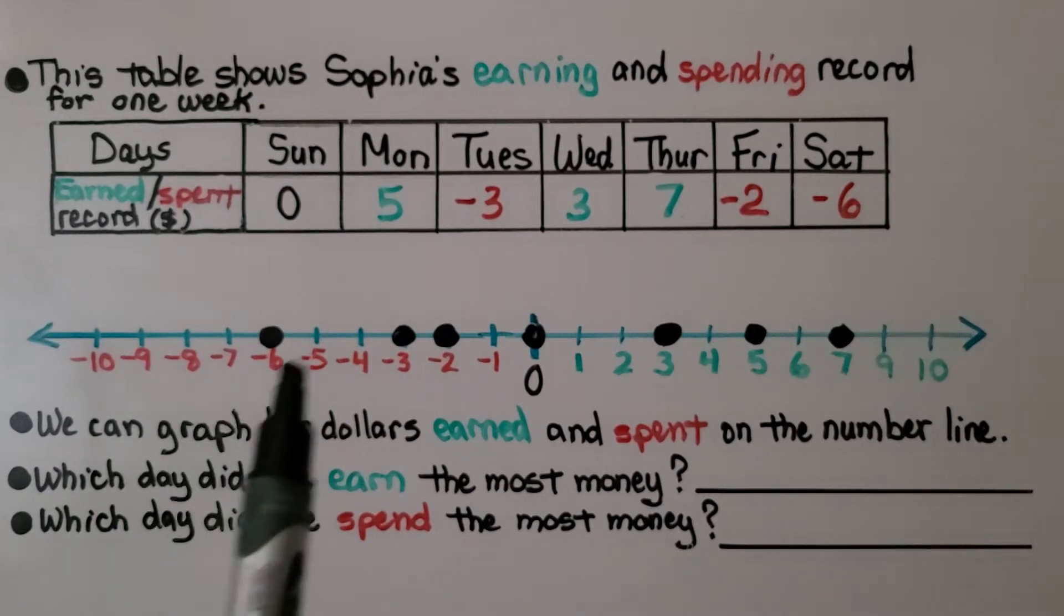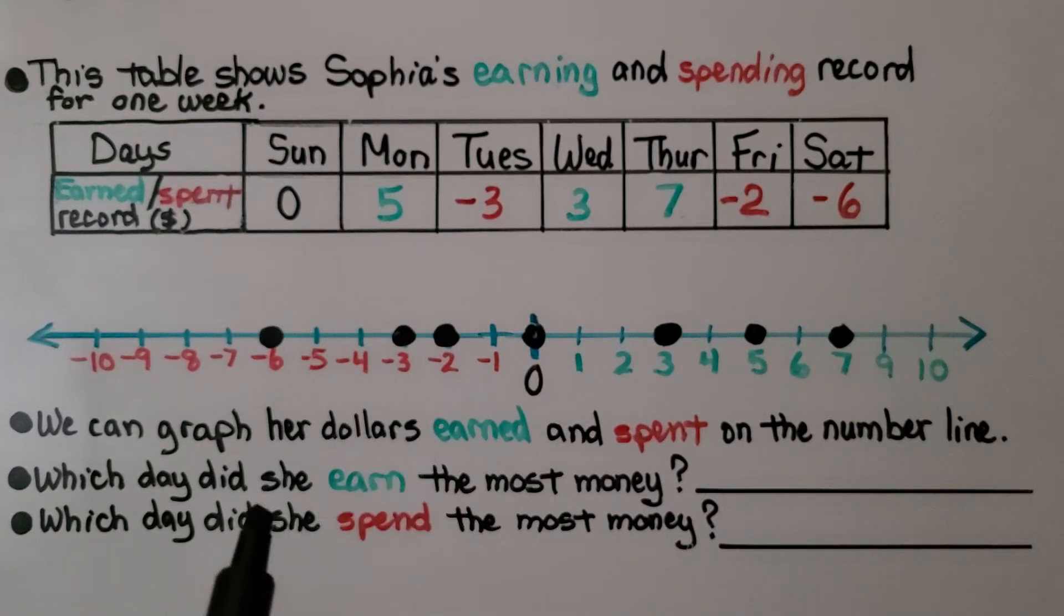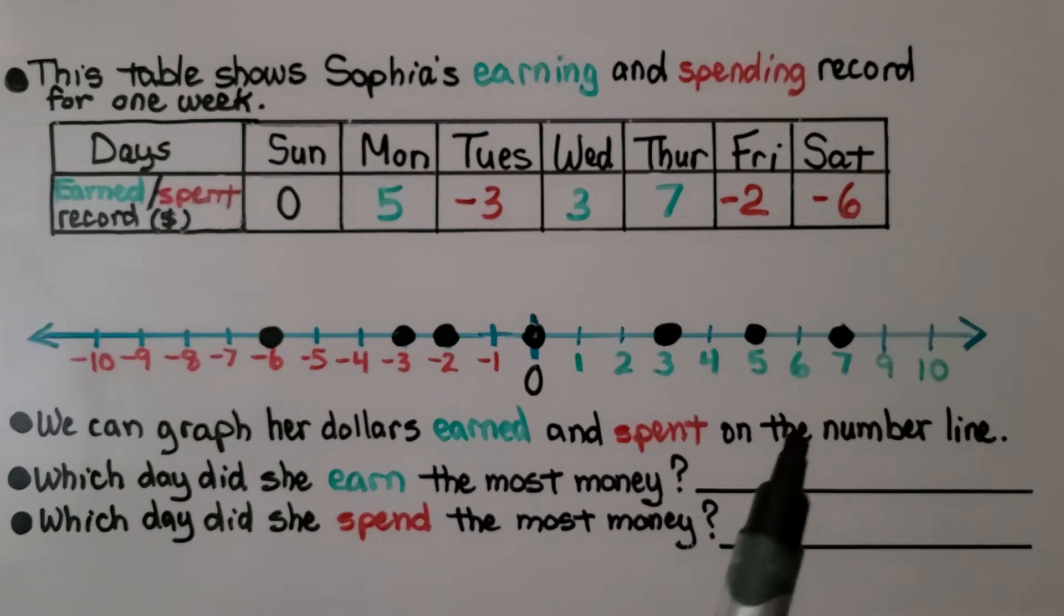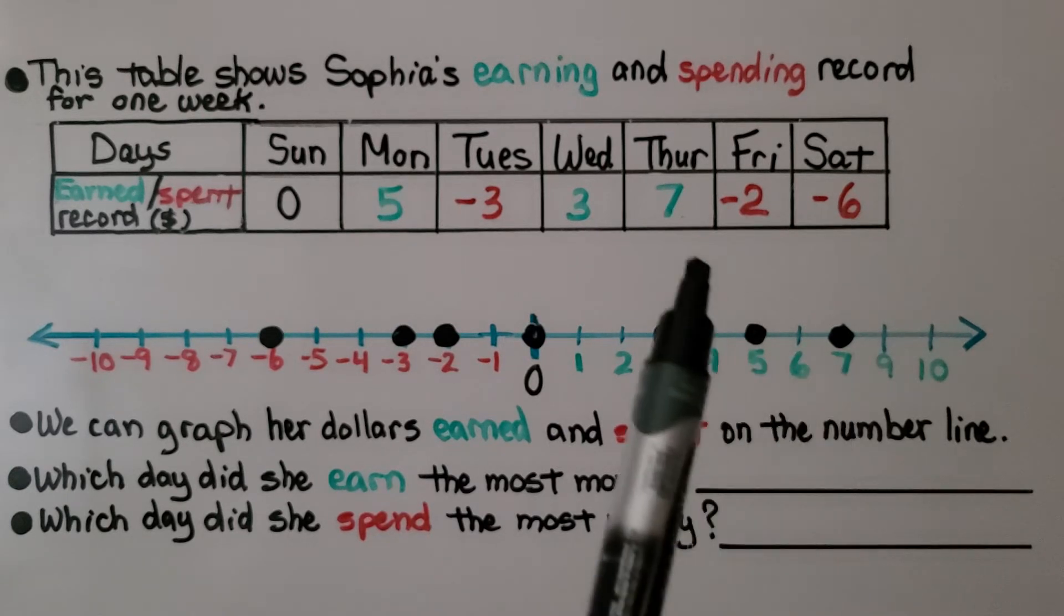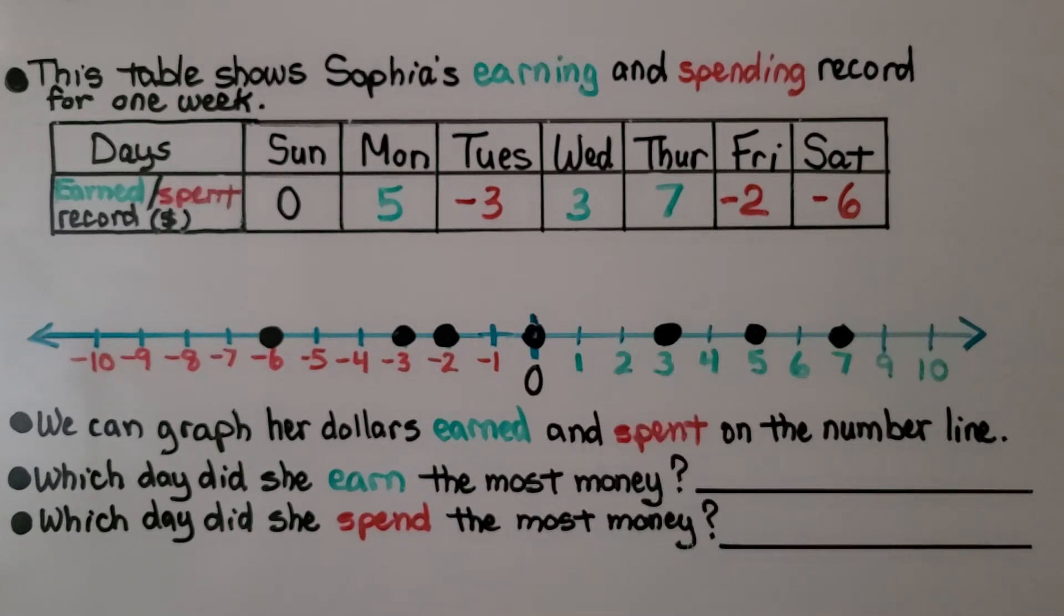So by looking at this table and this number line, which day did she earn the most money? Well, 7 is the greatest amount. That's Thursday. If you said Thursday, you're correct.